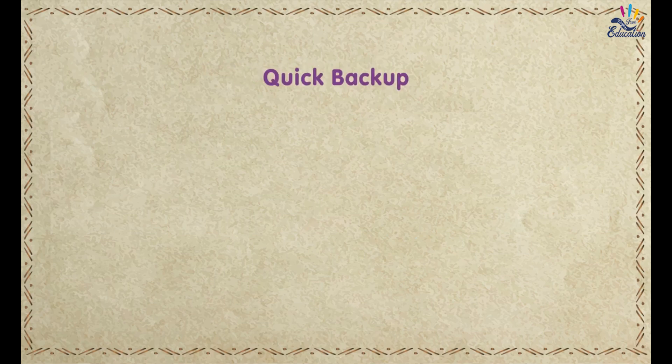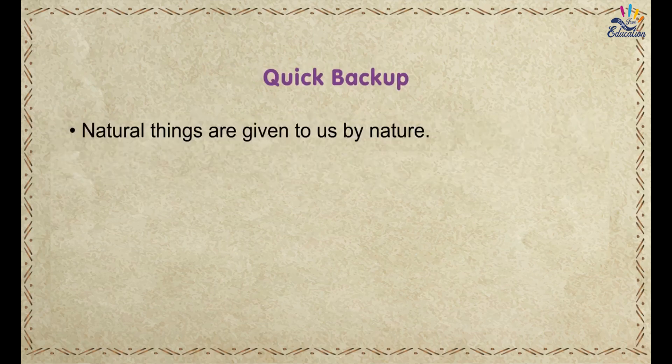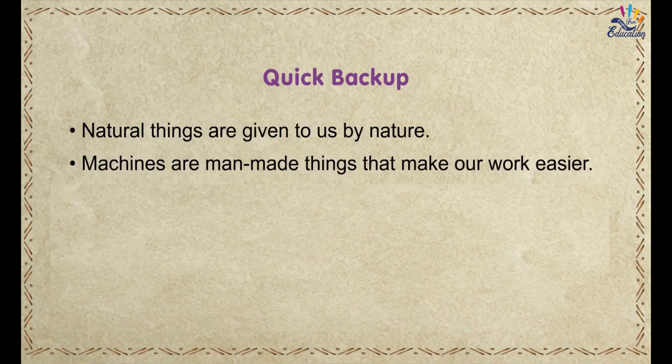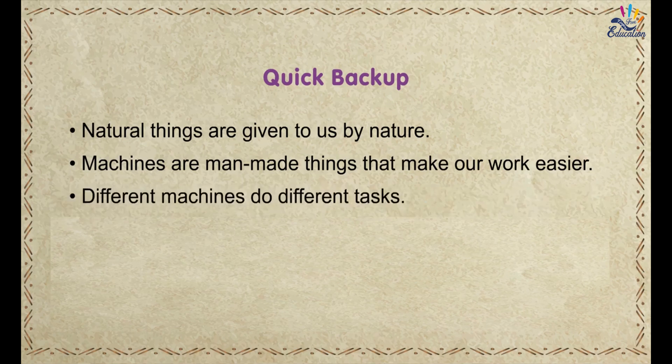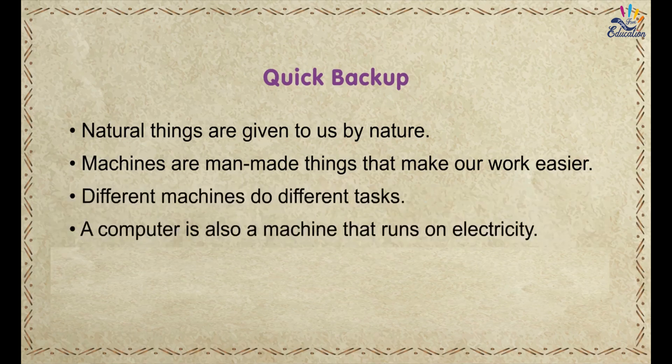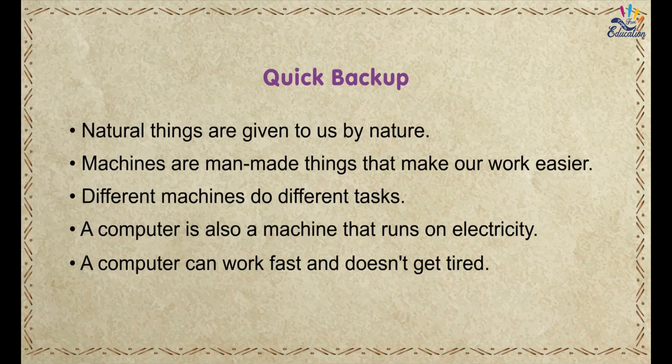Quick recap: Natural things are given to us by nature. Machines are man-made things that make our work easier. Different machines do different tasks. A computer is also a machine that runs on electricity and can work fast without getting tired.